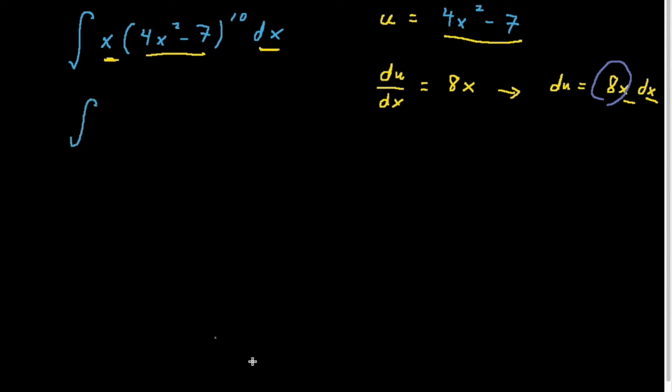So let's rewrite the integral, but let's add in this missing 8. Keep everything else the same. But you know, we can't just add an 8 whenever we feel like it. That changes the nature of the problem. So to balance it out, we're going to add a 1/8 out in front. That balances out the 8. 8 times 1/8 is 1, so we're allowed to do this.